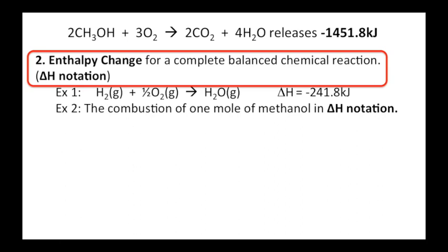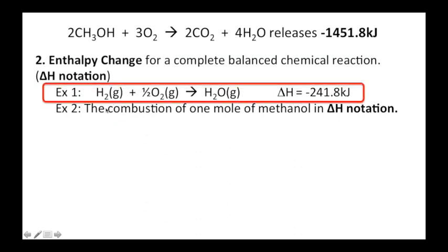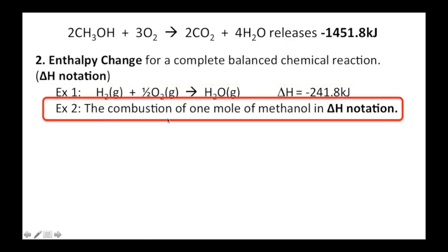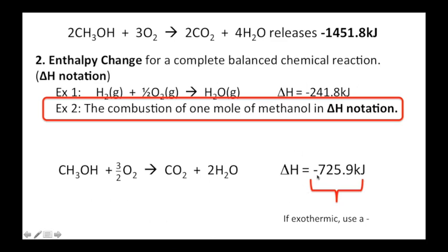The second way to communicate heat is what we call an enthalpy change, or delta H notation. So, here's what this looks like. It's very simple. You just have a balanced equation, a space, and then a delta H value. This is not kilojoules per mole. So, what is the combustion of one mole of methanol in delta H notation? I take this equation. I divide everything by two so that it's all one, and I just write a balanced equation. CH3OH plus 3 over 2 O2 makes CO2, two waters, space, delta H is negative 725.9 kilojoules. Now, if it's exothermic, we do put in the negative. If it was endothermic, we would use a positive, or just not put the positive in, and we would know you mean positive. Now, this reaction is exothermic, so that's the accurate way to write it.